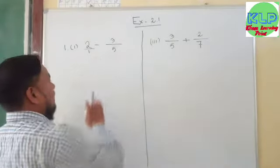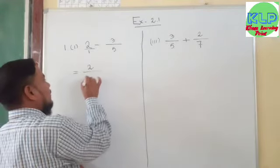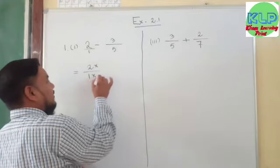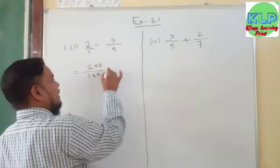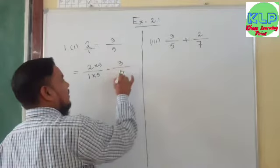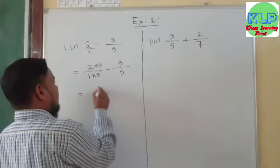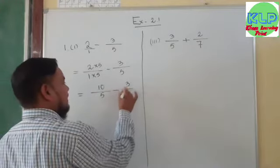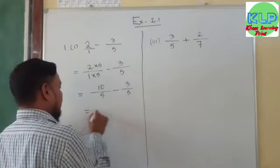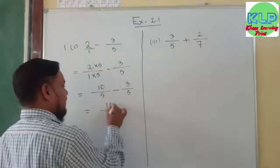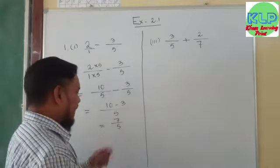We need to make the denominator 5. So for 2 over 1, we multiply both numerator and denominator by 5 — that gives 10 over 5. Minus 3 upon 5 already has denominator 5, so it remains the same. Now both denominators are the same: 5. So 10 minus 3 equals 7 upon 5. This is an improper fraction.